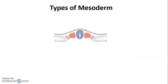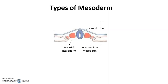In the middle, the rounded structure is the neural tube. On either side of the neural tube we have three different types of mesoderm. Just adjacent to the neural tube we have paraxial mesoderm, then we have the intermediate mesoderm, and adjacent to the intermediate mesoderm we have lateral plate mesoderm.